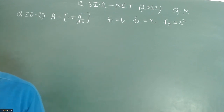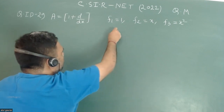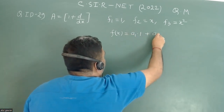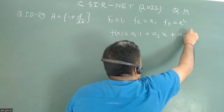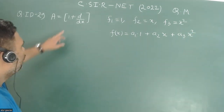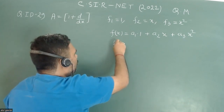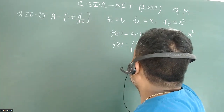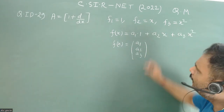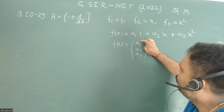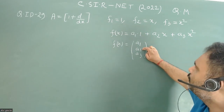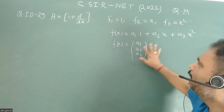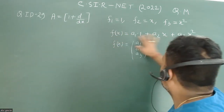We have to write operator A in a 3×3 matrix form. We assume there is some function f(x) given by a1·1 + a2·x + a3·x². This f(x) can be represented as a column matrix [a1, a2, a3], where a1 is the coefficient of the constant term, a2 is the coefficient of the linear term, and a3 is the coefficient of the square term. We can mentally represent this polynomial by this column vector.